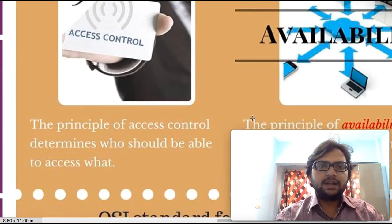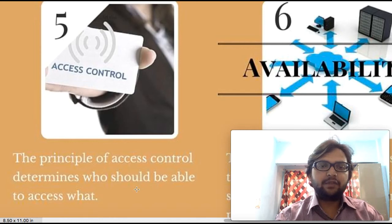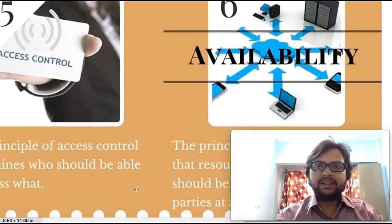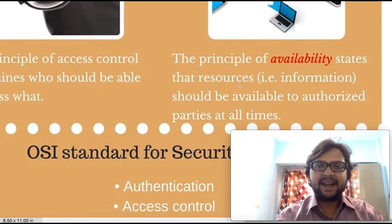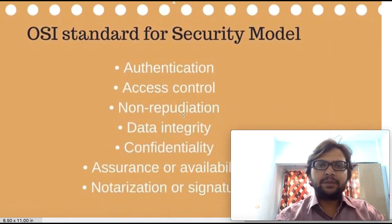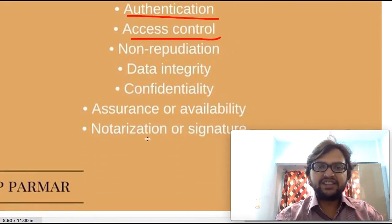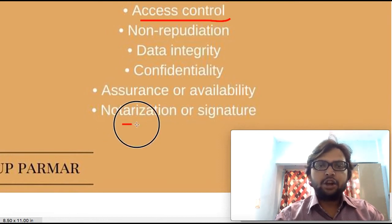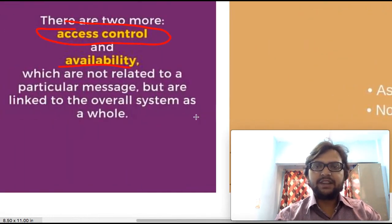Access control means if I am an authorized person, I should get access to that data at any point of time from any place. The principle of access control determines what should be accessed and at what time. Availability means it should be available from anywhere, from any device — the principle of availability states that resources, that is information, should be available to authorized parties at all times. The OSI security model layers are: authentication, access control, non-repudiation, integrity, confidentiality, assurance of availability, and notarization of signature.